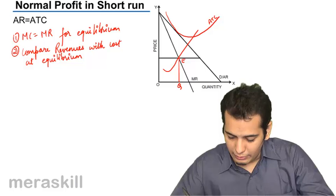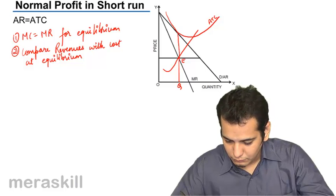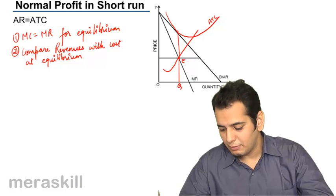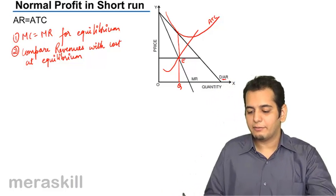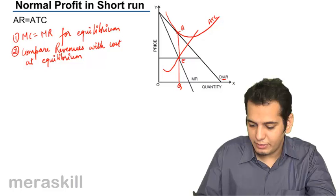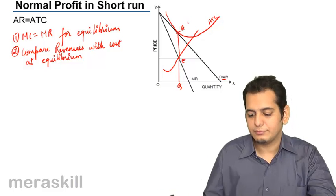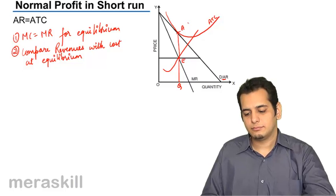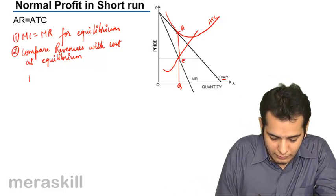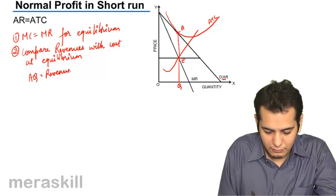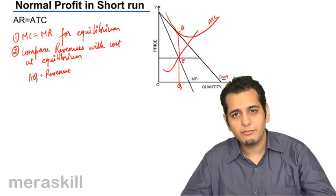So, now, I'll go up from the point of equilibrium till my AR curve. I'll get my revenue. Let me name this point as A. So, AQ is my revenue. I found out my revenue.